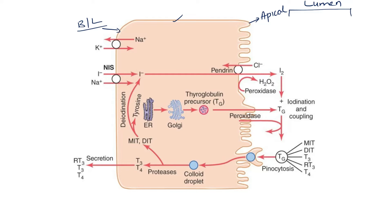The first and foremost step in the synthesis of thyroid hormones is transportation of iodide from the capillaries into the epithelial cell. This is achieved due to the presence of a transporter in the basolateral membrane called the sodium-iodide symporter. As the name tells, it transfers one iodide and two sodium from outside the cell to the inside, and this transportation is an active transport.